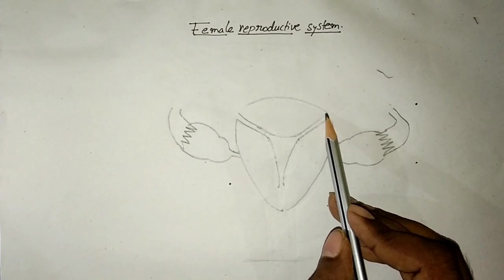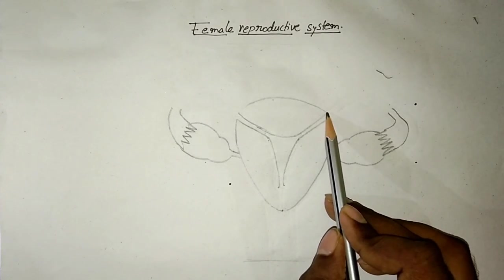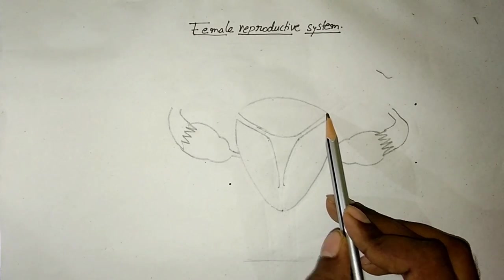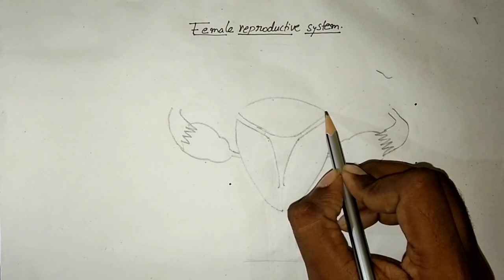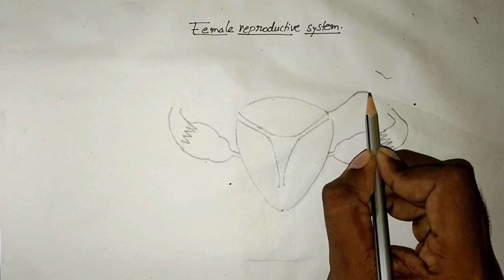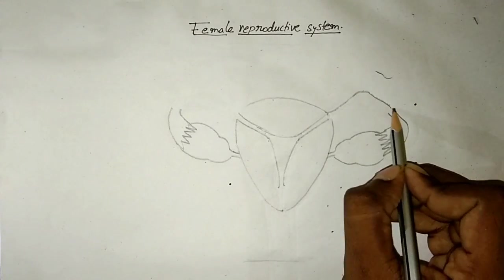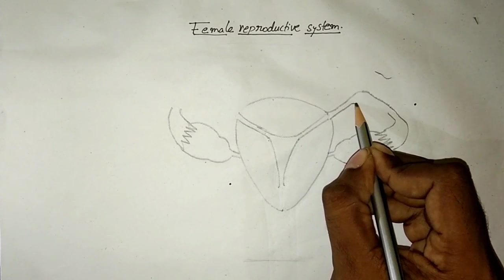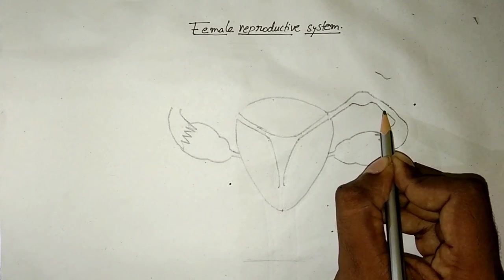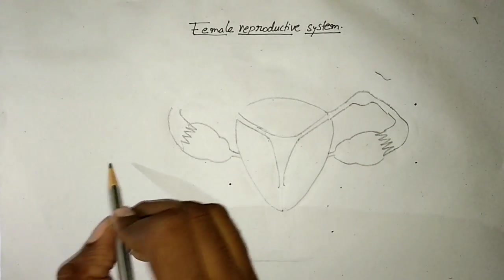Now I am going to attach the body of the uterus with the fallopian tubes. Now I start from the uterus and slowly I connect on the other side to the infundibulum. And one more curve, the swollen region is called ampulla.